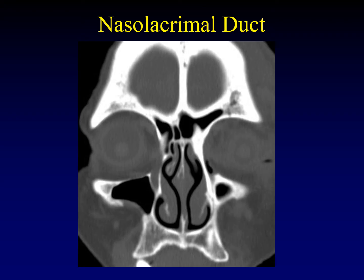The nasolacrimal sac begins on the medial side of the orbit, extends down as a vertically oriented duct, and dumps into the inferior meatus. Sometimes the nasolacrimal duct is entirely filled with fluid tears; sometimes there's a little bit of gas — both are normal, no big deal.